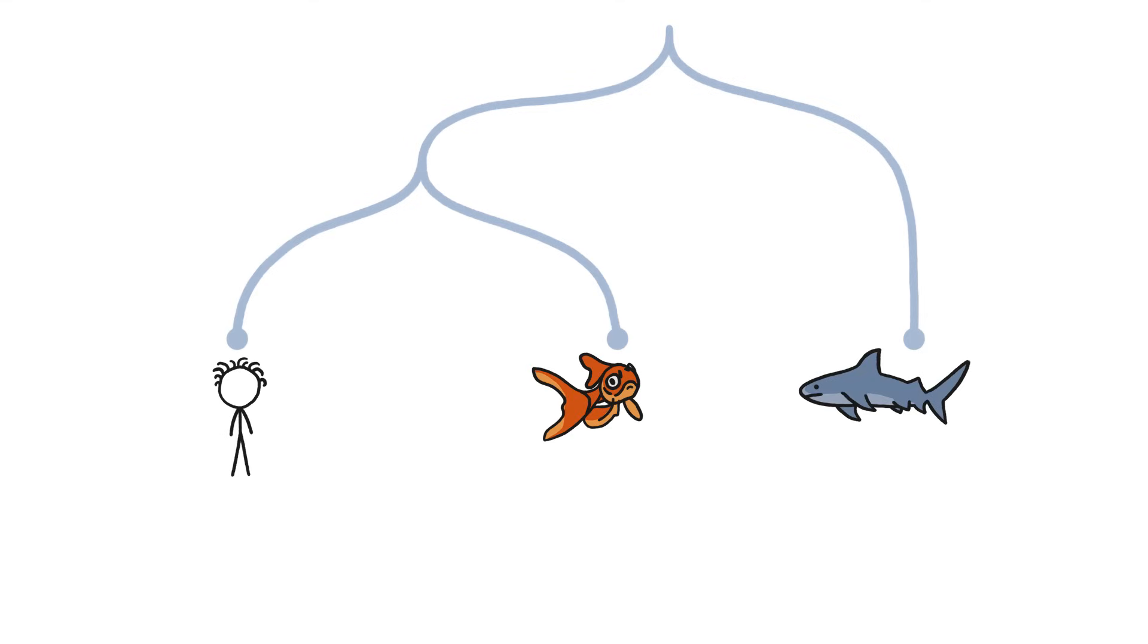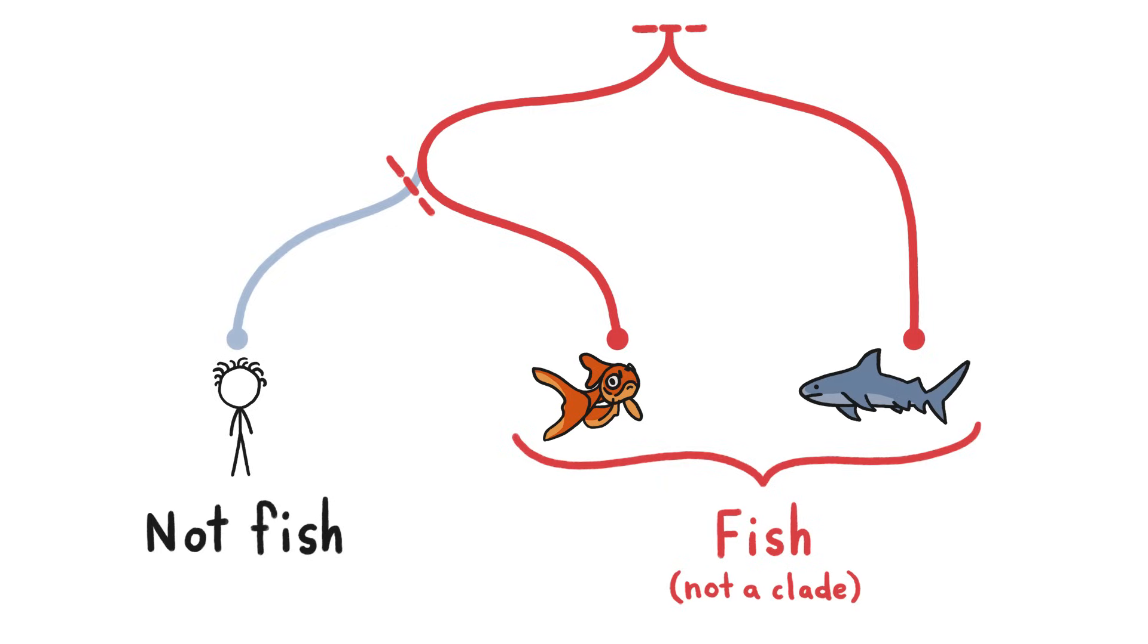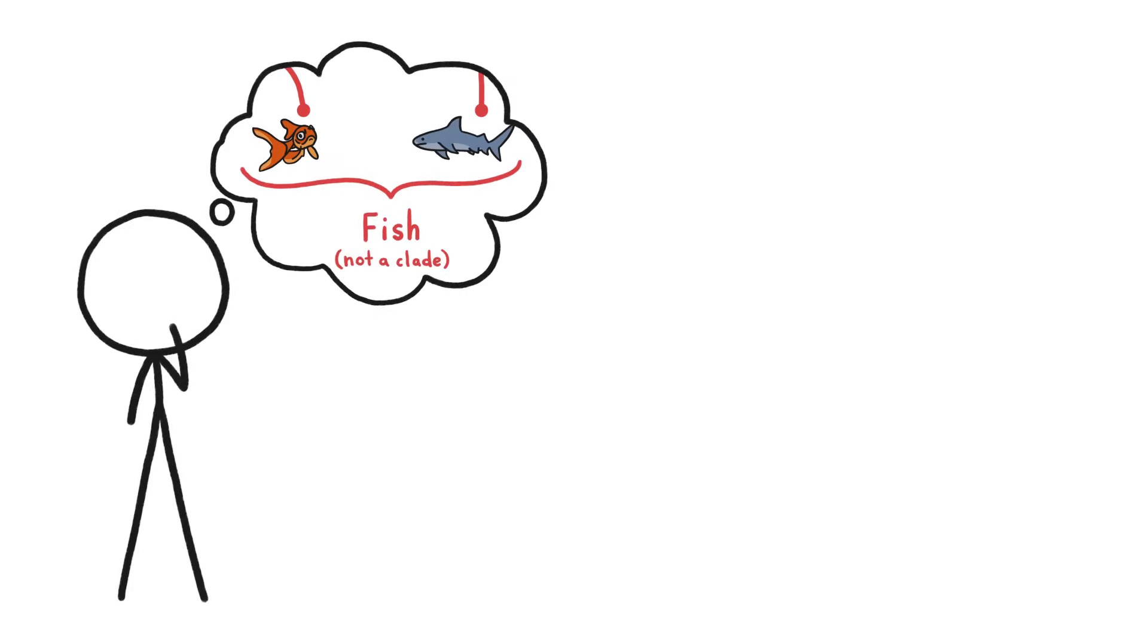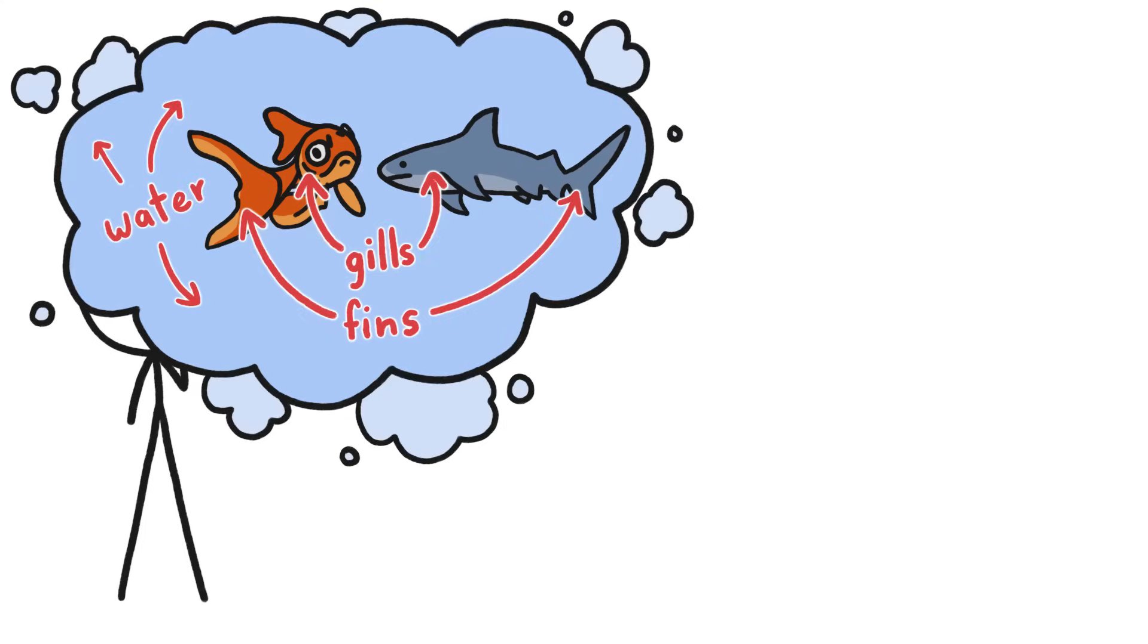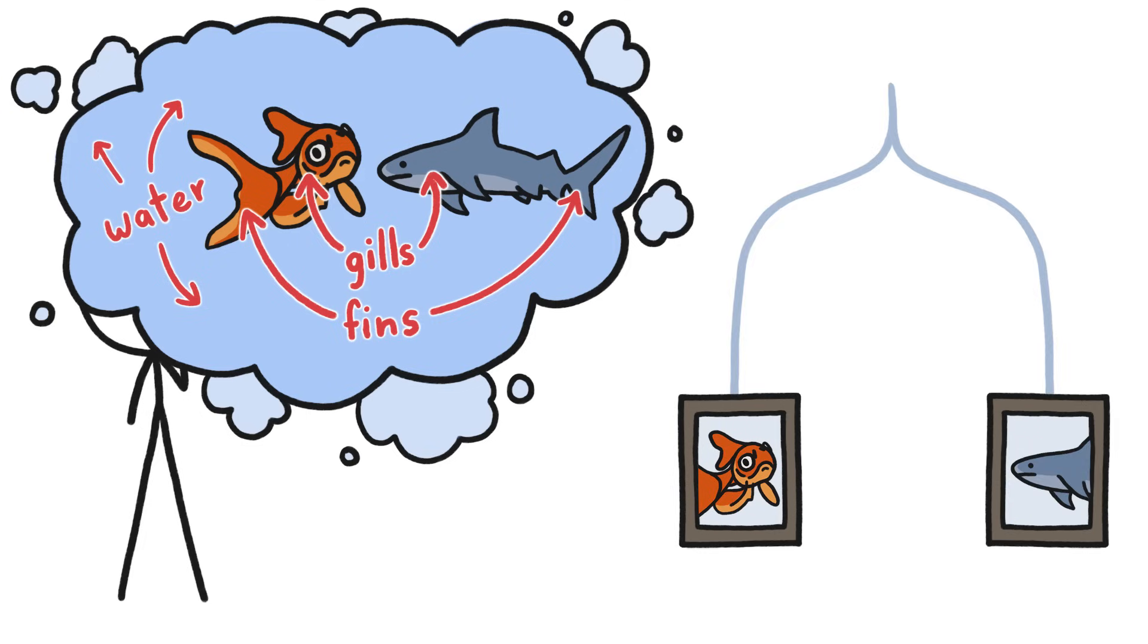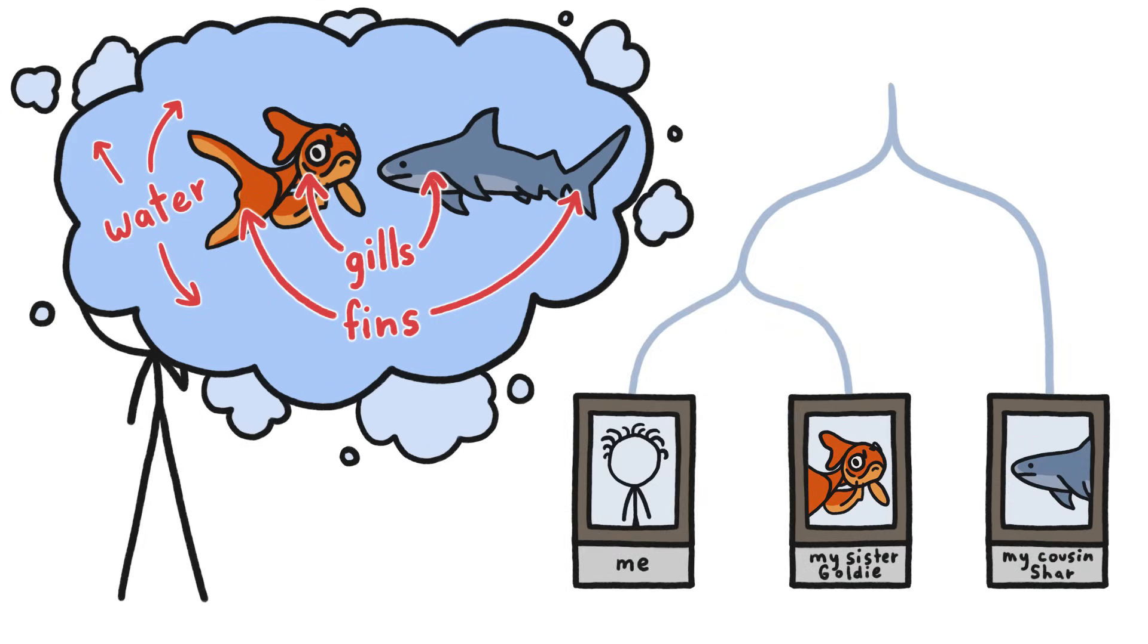So is there something wrong with saying that goldfish and sharks are both fish but humans aren't? No, it just means that category isn't a clade, and in some circumstances that may be more useful. But if you think about it, that traditional association of the word fish with gill-finned water-dwelling animal does blind us to this interesting truth. Although goldfish are related to sharks, they're actually more closely related to us.